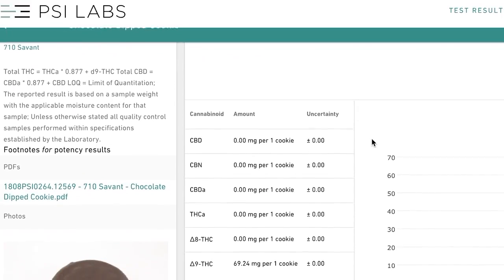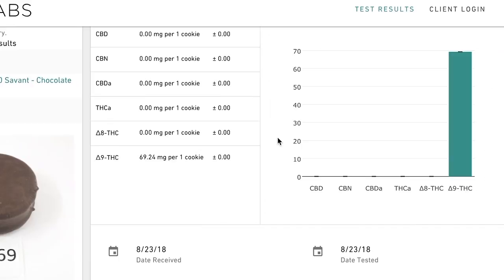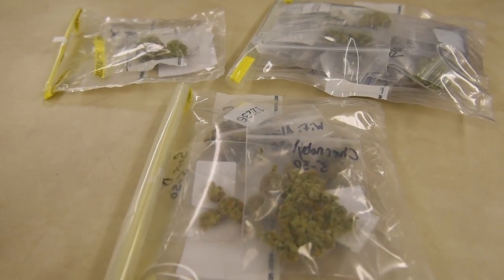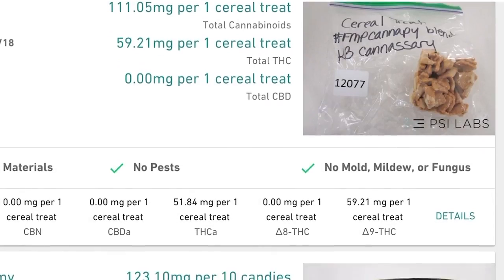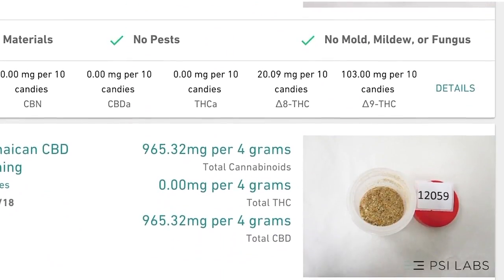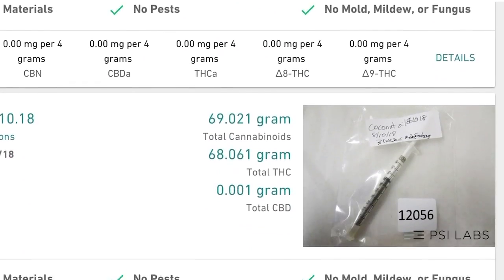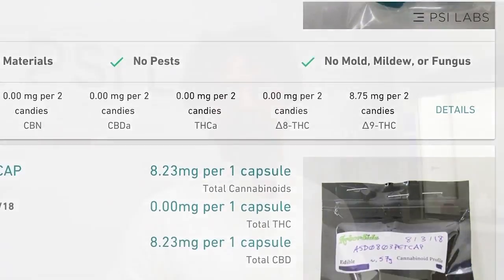THCA stands for tetrahydrocannabinoid acid. It's the natural form that THC takes in plants, but you need to heat it during the process of either vaping, smoking it, or prior to making edibles, actually heat the flower or oil itself in order to break that THCA down to the active form, delta-9-THC, that we're most familiar with.